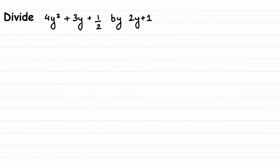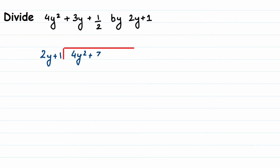Now we'll move on to the second question. Divide 4y squared plus 3y plus one-half by 2y plus 1. So the divisor is 2y plus 1 and the dividend is 4y squared plus 3y plus one-half.